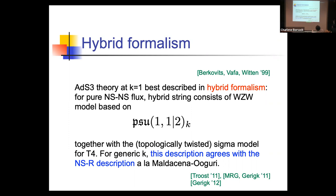This description was invented as a way of describing theories with background Ramond-Ramond flux, but you can concentrate on the point without switched-on background RR flux. Then it is precisely a supergroup WZW model based on PSU(1,1|2) together with a sigma model for T4, plus chiral boson fields playing the role of ghosts needed to formulate the physical state condition. This description is believed to be exactly equivalent to the Maldacena-Ooguri description — the Green-Schwarz version of it.